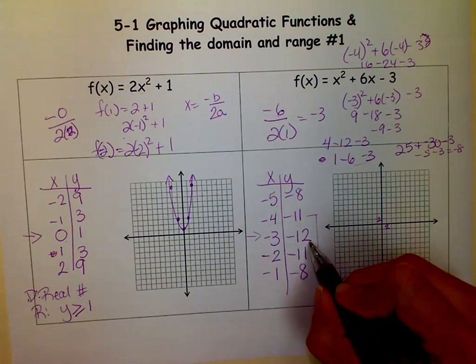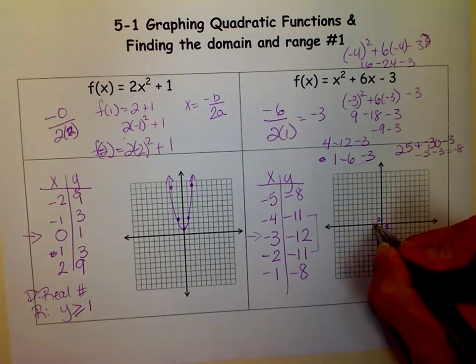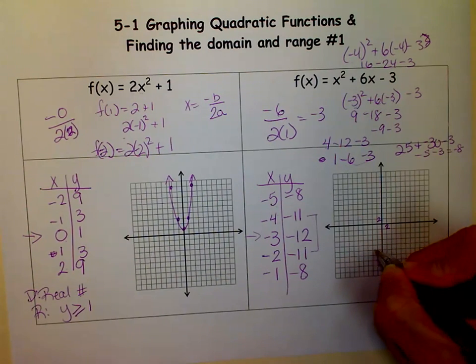So now I'm going to graph negative 3, negative 12. So 2, 3, there's my 3. 2, 4, 6, 8, 10, 12. There's my vertex point.